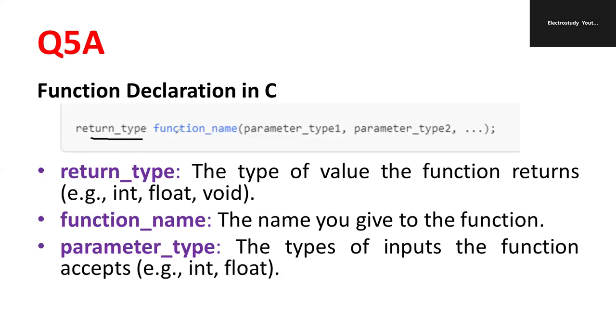Now, syntax will be in this fashion. Like a return type, then function name you can put. It may be like input or whatever it may be. Then parameter type 1, parameter type 2, etc. So we have like a return type. It can be like int, float, double, void, etc. Function name will be like you can give the name of the function. Then parameter type, the types of the input which the function accepts. This is a general syntax which is applicable for function declaration.